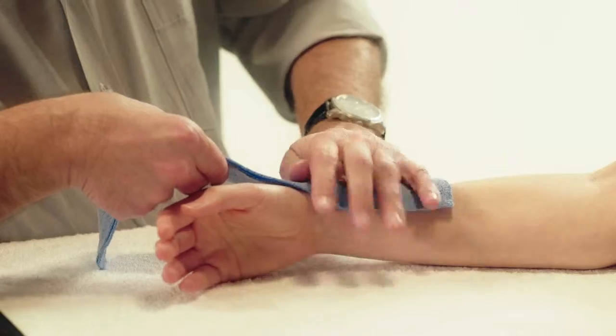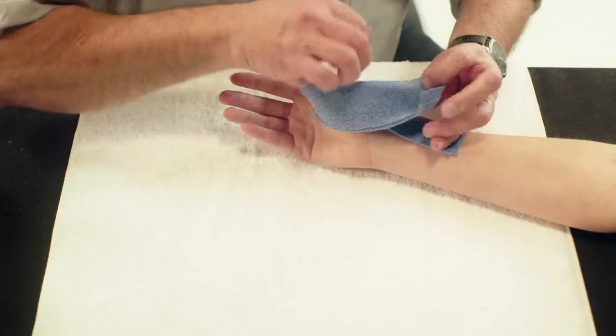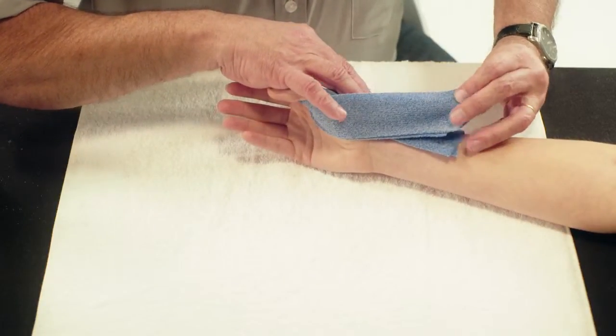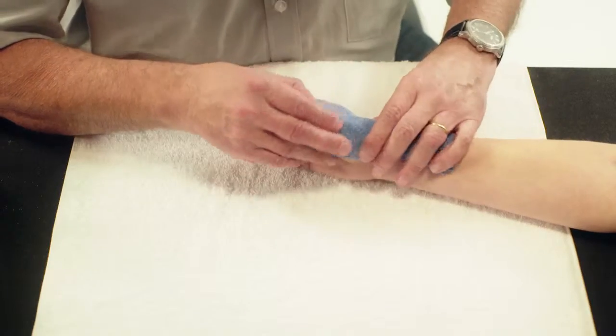Place the Orficast on the radial dorsal surface of the forearm and wrap in the middle around the thumb. Pull through the web space and adhere back onto the dorsal surface of the orthosis.